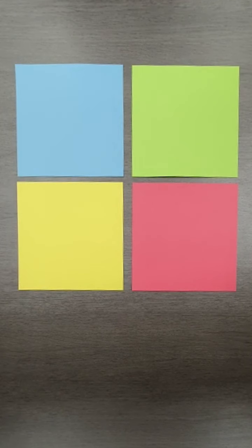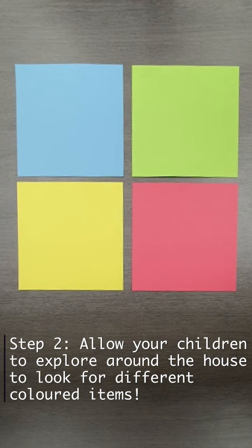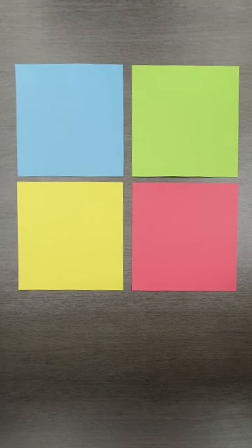So for the purpose of this video, I've already prepared the materials beside me but of course allow your children the chance to go around to the bedrooms, to the living room, to the kitchen, anywhere along the house as long as you are supervising them. So for this activity, all they have to do is just find matching materials to the different colours.